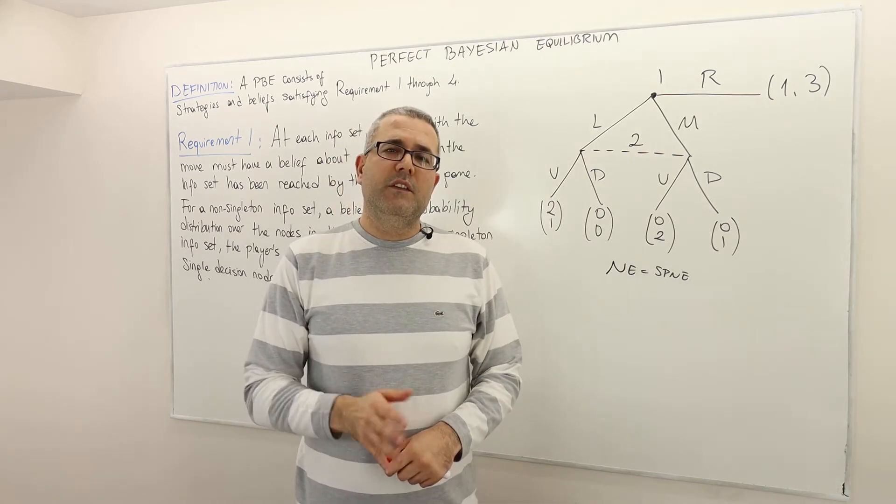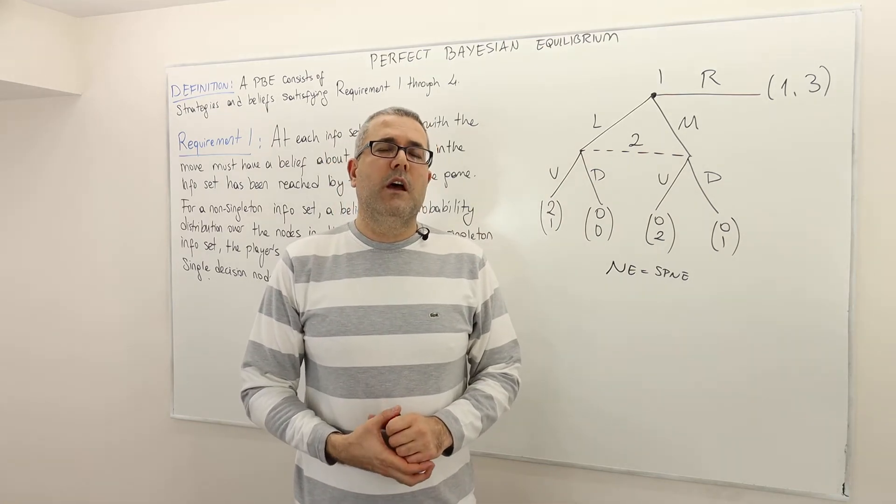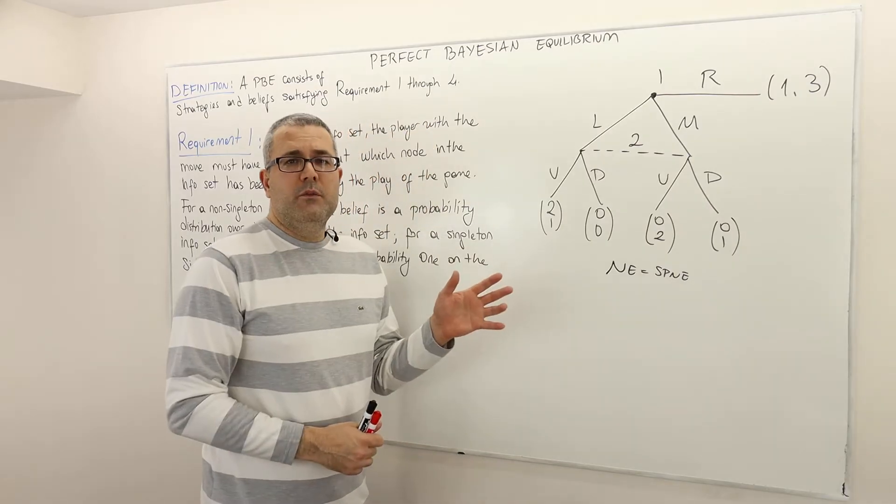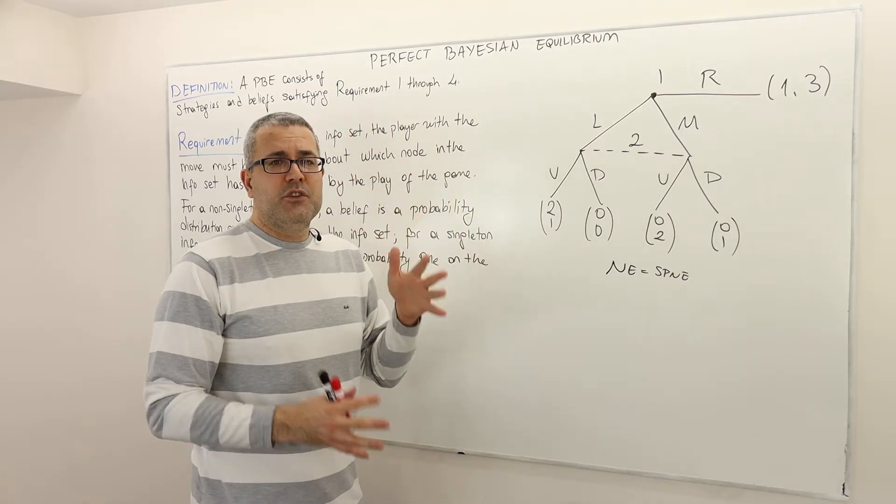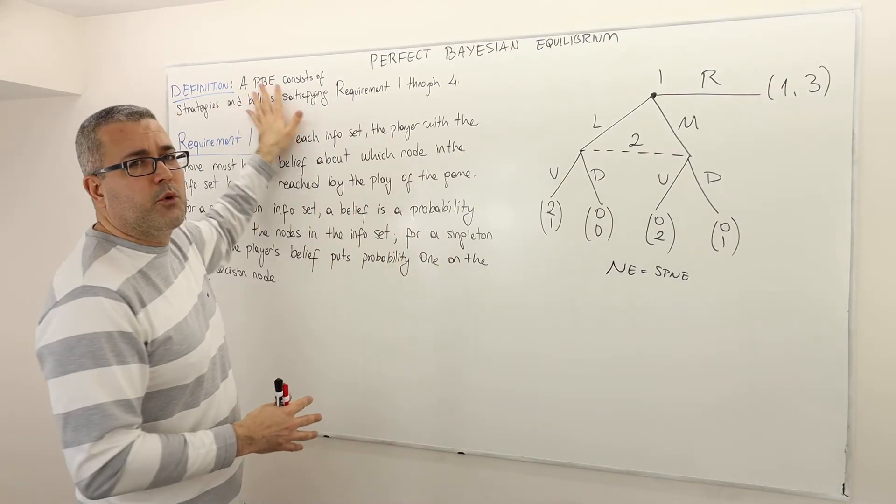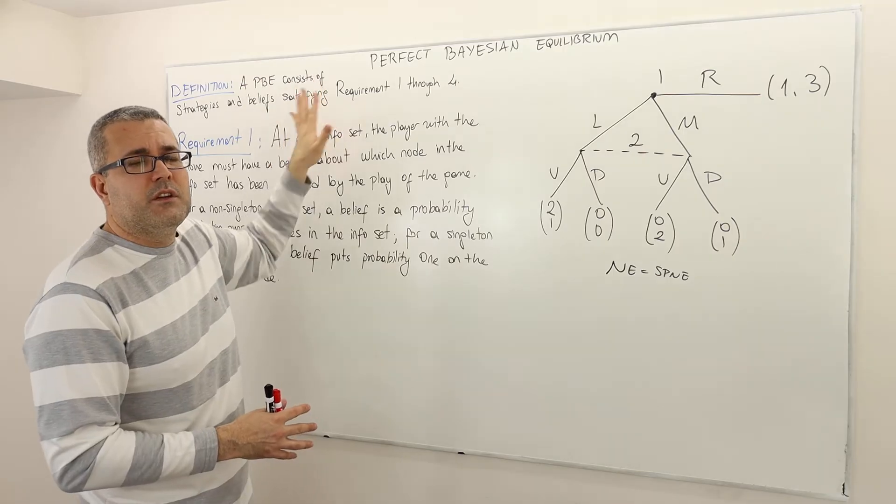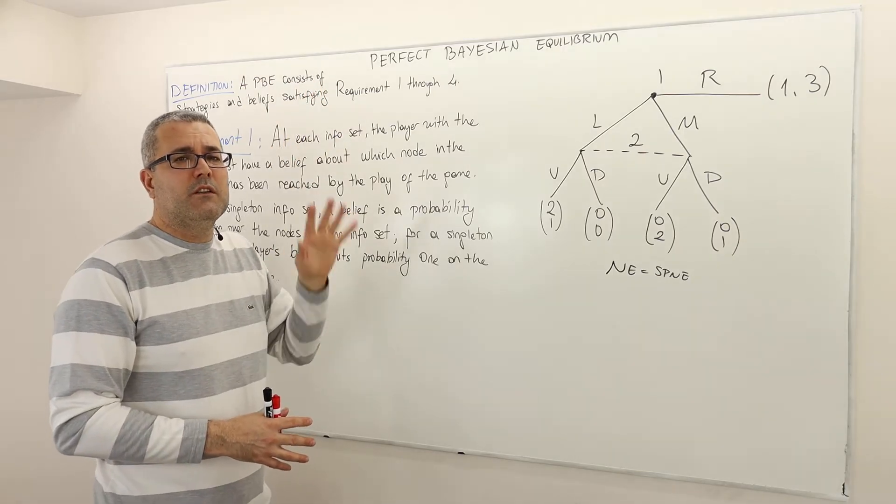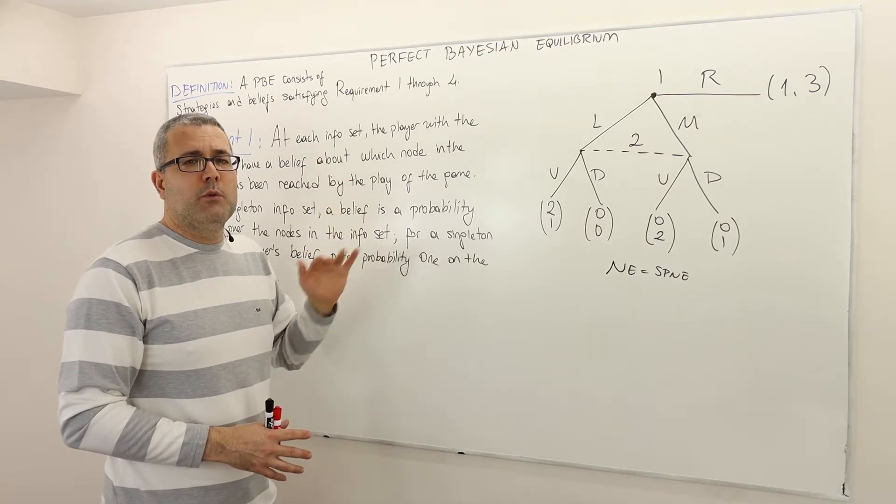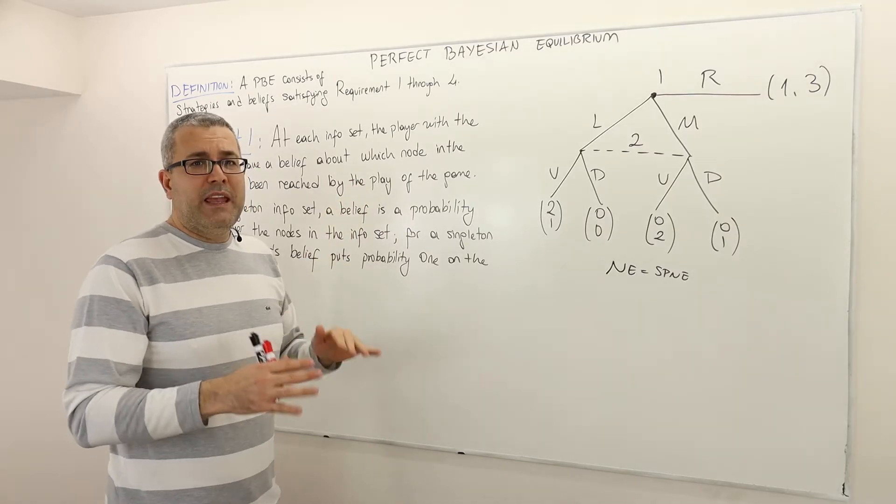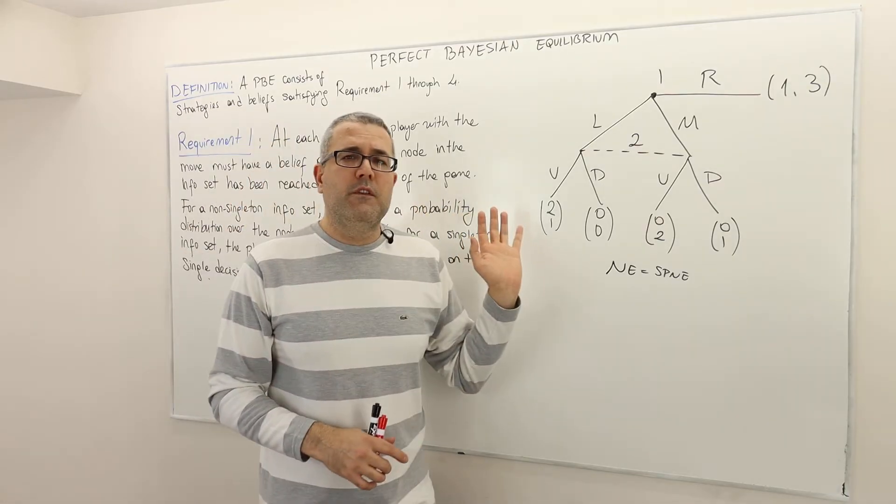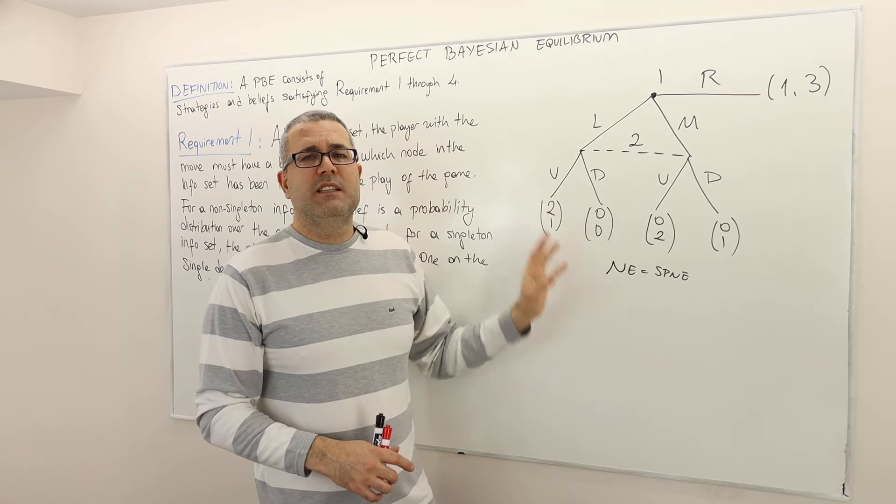Hello everyone. In this episode I'm going to talk about perfect Bayesian equilibrium. I wanted to do this in potentially several episodes because I am going to give you a very important definition and this definition requires you to understand four important requirements, so I want to go over those requirements one by one to make each one of them 100% clear and for all of those I'm going to use exactly the same example.